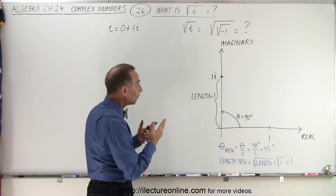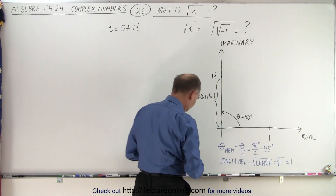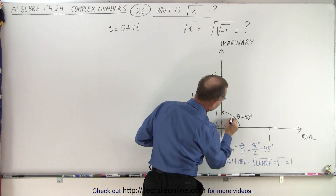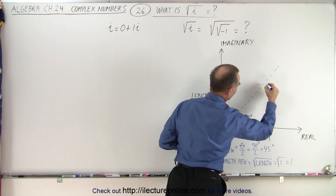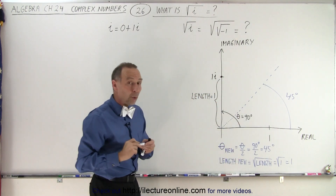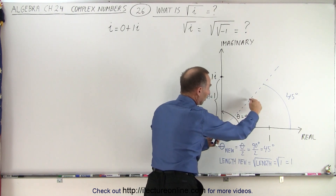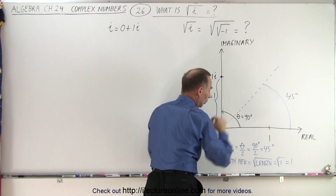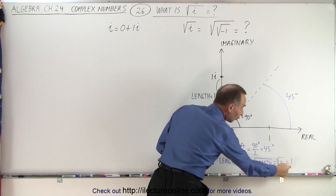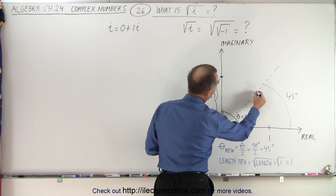So now we know that the square root of that will lie on the line that only has an angle of 45 degrees. So let's draw a line of 45 degrees like this. So there's my 45 degree angle. And we know that the point — the square root of i — will be at some point on that line a distance 1 away from the origin, because the new length will be the square root of the old length, which is also equal to 1 because the original length was equal to 1.